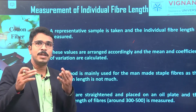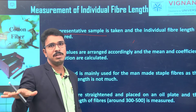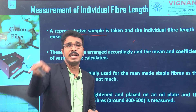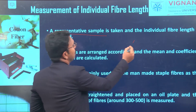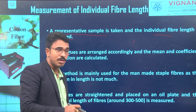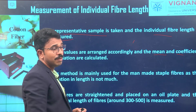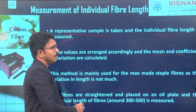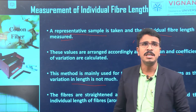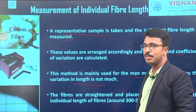Generally, from the bales of cotton we receive, we take a representative sample by random sampling so that the sample represents the entire bulk quality. Individual fiber length is then measured. The fibers are straightened and placed on an oil plate and individual lengths are measured. This method is used mainly for manmade staple fibers, where variation in fiber length is not too much.